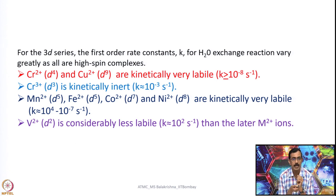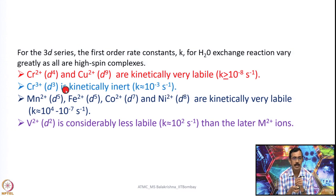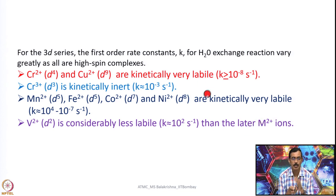For the 3D series, the first order rate constant K for water exchange reaction varies greatly as all are high spin complexes, and crystal field effect is also less pronounced. For example, chromium 2+ and copper 2+ with D4 and D9 electronic configurations are very labile. Chromium 3+ with D3 electronic configuration is kinetically inert — you can see the drop in rate. D5 species such as Mn 2+ and Fe 2+, D7 species such as Co 2+, and D8 Ni 2+ are all kinetically labile. Vanadium 2+ with D2 configuration is also considerably less labile than the later M2+ ions.